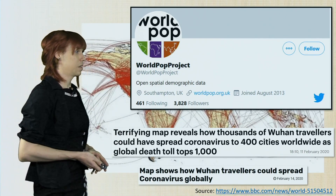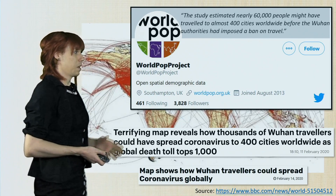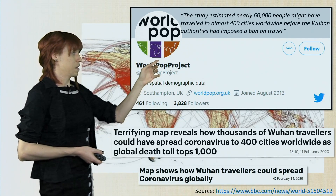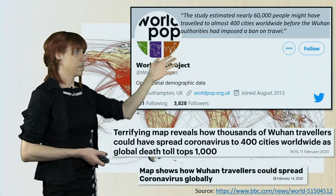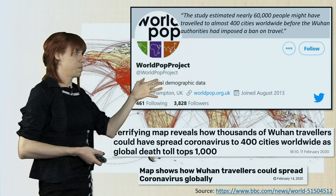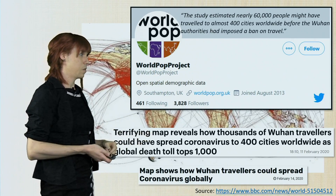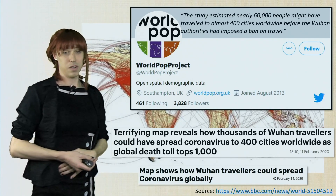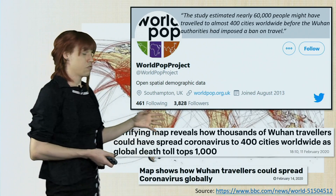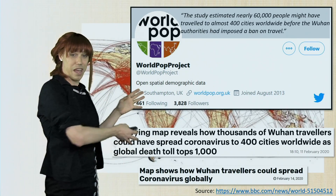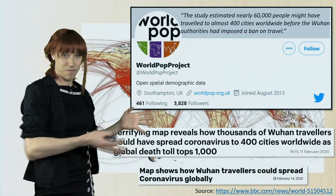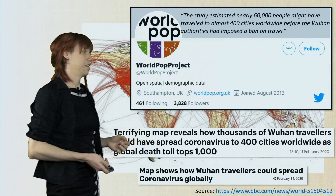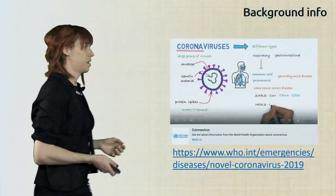In this study they use statistics like an estimate that nearly 60,000 people may have traveled to almost 400 cities worldwide before the Wuhan authorities imposed a travel ban. That may well be true, but to use every single airline network route to demonstrate that is a little bit misleading.